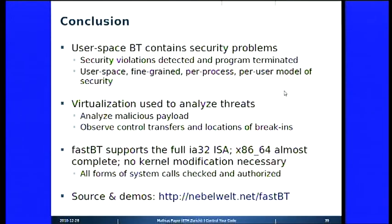To wrap up: user-space virtualization and binary translation contain security problems, security violations are detected, and the program can be terminated before any evil code is executed. User-space virtualization is a fine-grained per-process, per-user trust model. The tool presented is called FastBT. It supports the full IA32 ISA; x86-64 support is almost complete and will be released soon. No kernel modification is necessary — you can download it, compile it, and it comes with test cases and exploits.